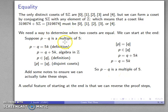So, what does that mean? Well, I start here, P minus Q is a multiple of 5. I end here, the cosets are the same. Or, I start with the cosets are the same, I know that P minus Q is a multiple of 5.